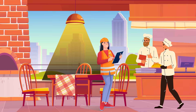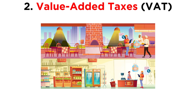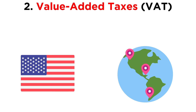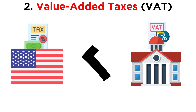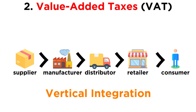Finally, the wholesale bakery supply distributor sells packaged bread to restaurants and supermarkets across the country — value has once again been increased, so yet another VAT is collected. The vast majority of countries in the world have a value-added tax, but a glaring exception is the United States, which relies on sales taxes instead. Governments often prefer the VAT over the sales tax, since it encourages more specialization and discourages vertical integration, which is when one company completely owns and controls the supply chain.